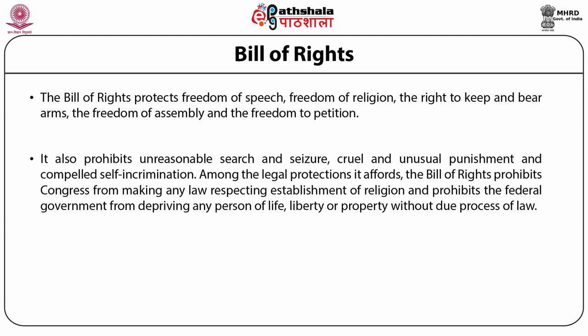Most importantly for our purposes, the Bill of Rights prohibits the federal government from depriving any person of life, liberty, or property without due process of law — the due process clause. If the state is depriving an individual of life, that procedure must be fair, just, and reasonable. A procedure that flows from Congress and has the sanction of the sovereign. You cannot simply presume guilt without following due process.